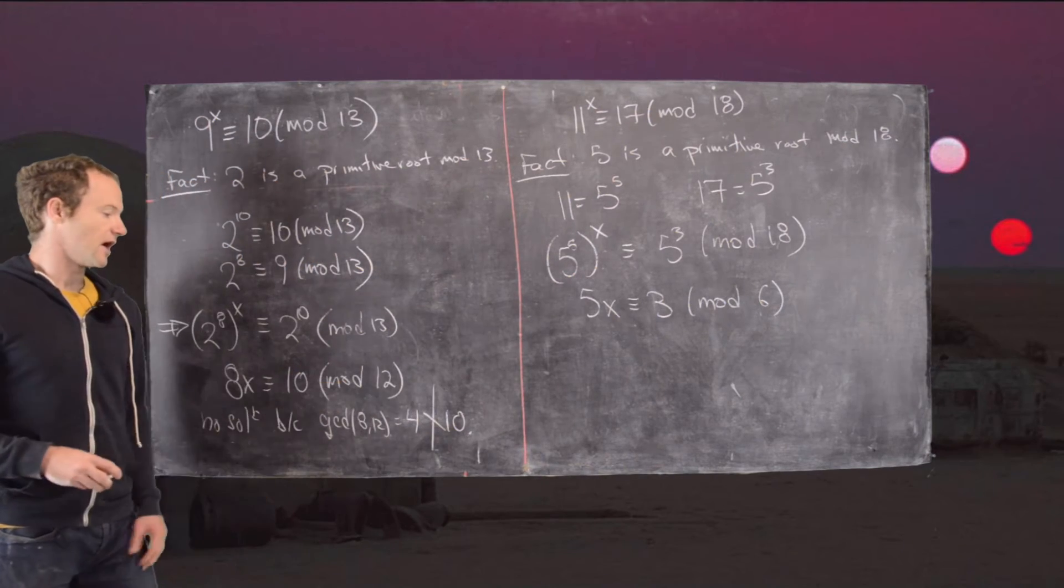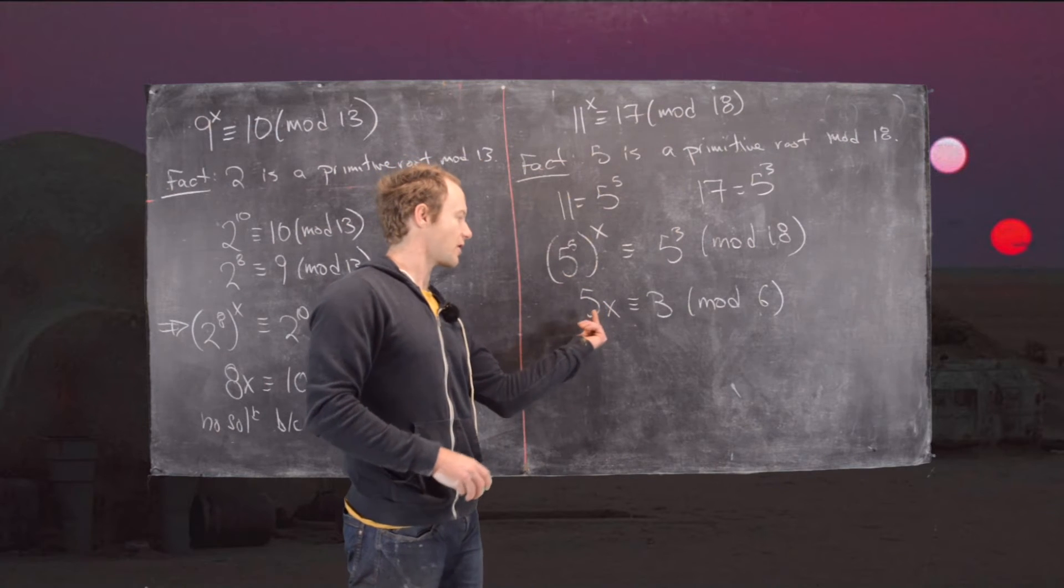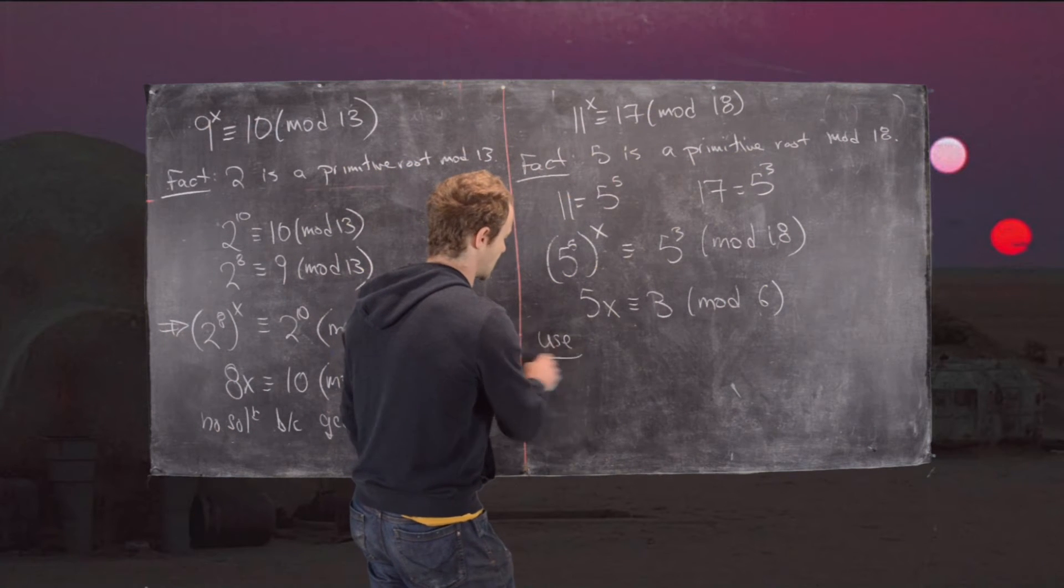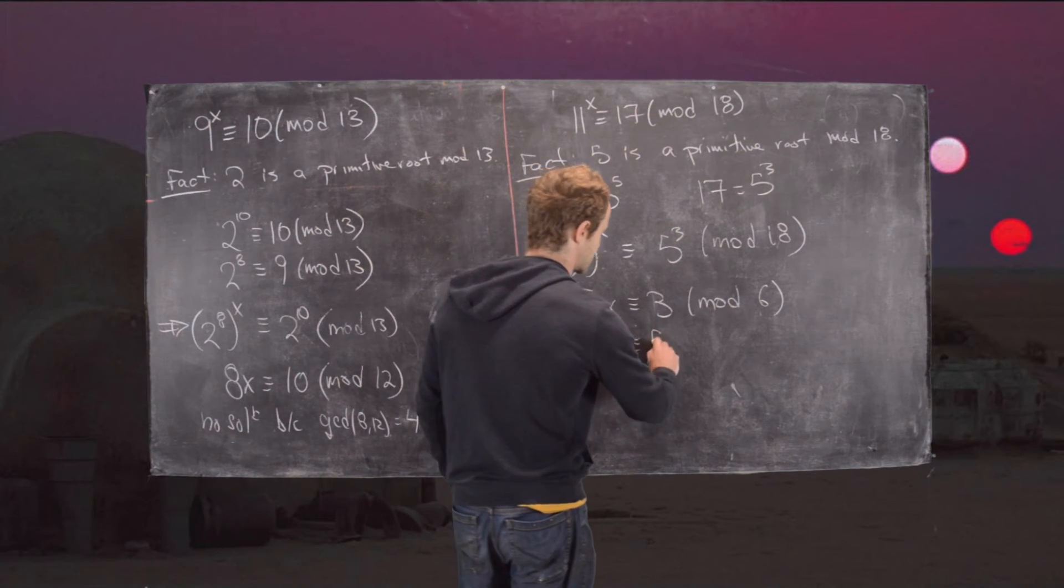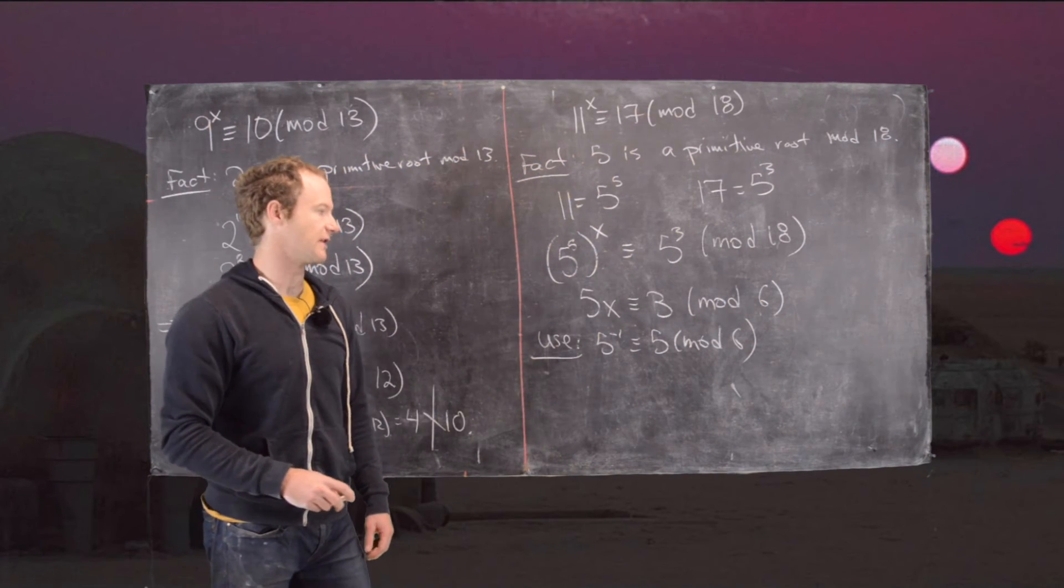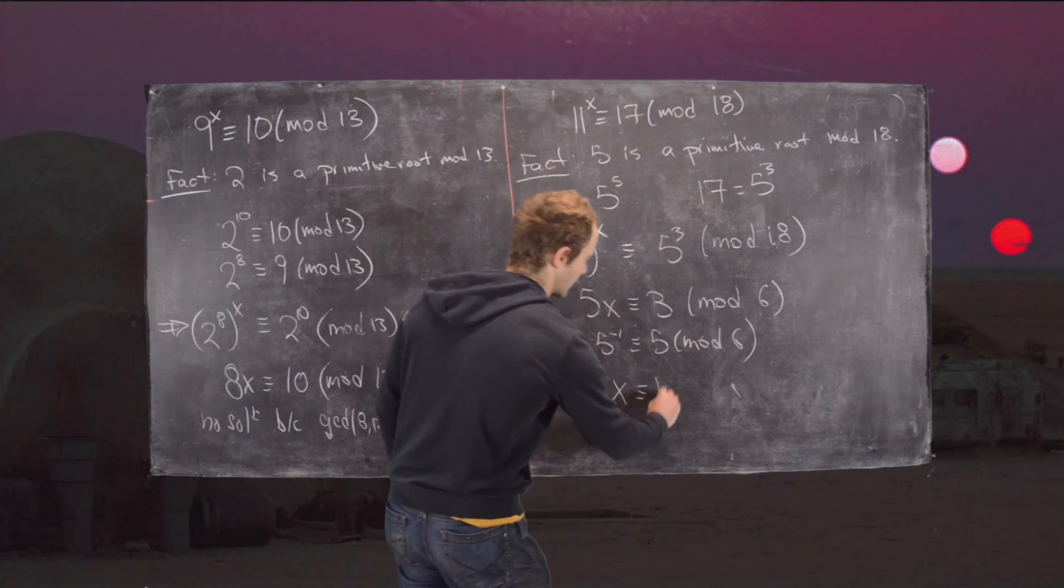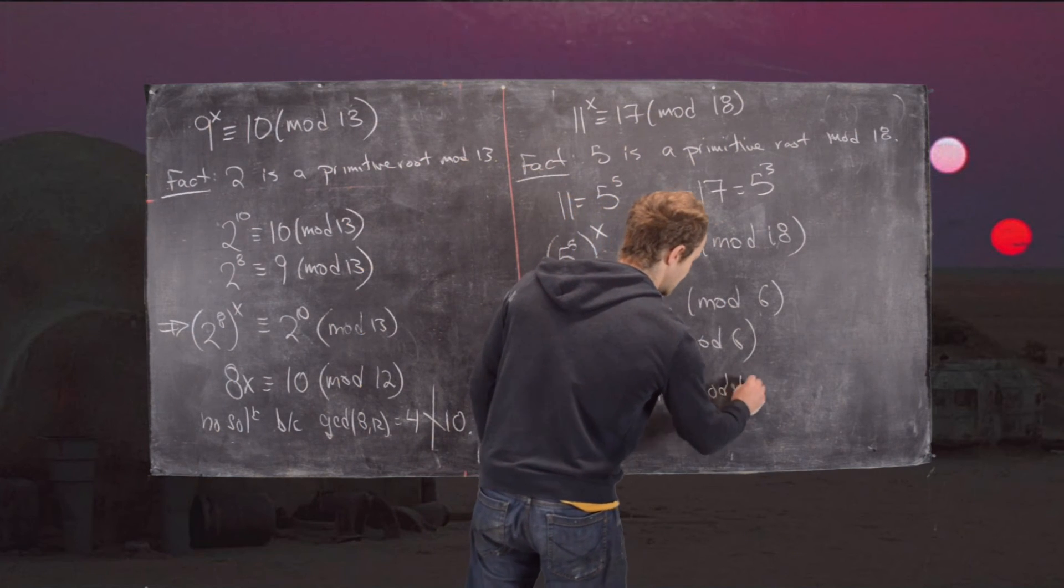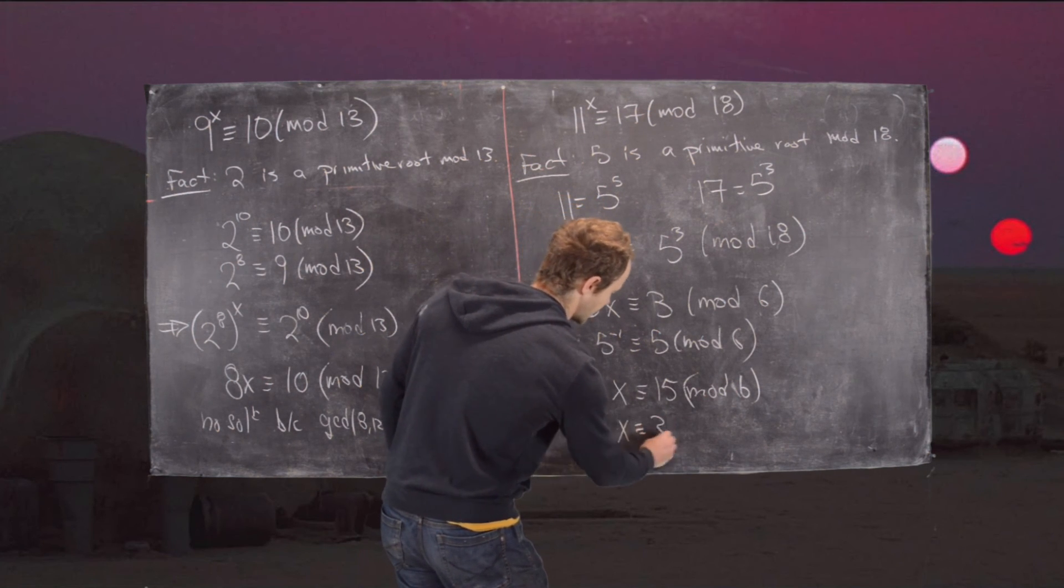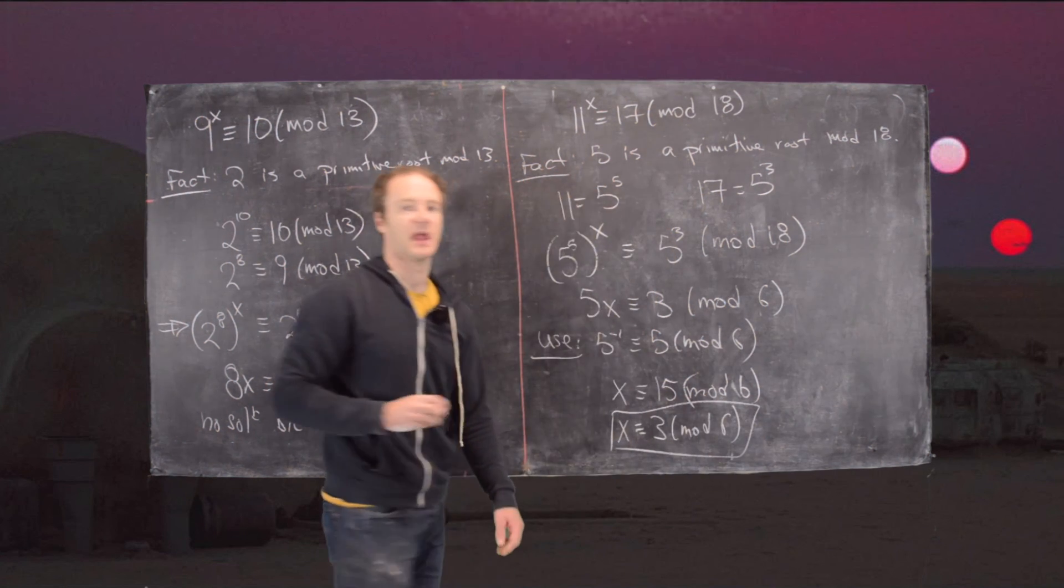We can check using the same thing that we did over here to see that there is a solution. Furthermore, this one is easy to find because 5 is relatively prime to 6, so it has an inverse. In fact, 5 inverse is congruent to 5 mod 6, so it is its own inverse. We'll multiply both sides by 5. On the left hand we'll get x, and on the right hand we'll get 15 mod 6. But 15 mod 6 is the same thing as 3 mod 6, so x is congruent to 3 mod 6. And that's our final solution.